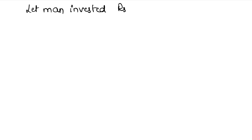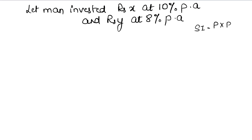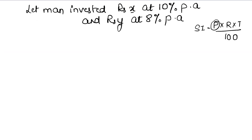Let men invested rupees x at 10% per annum and rupees y at 8% per annum. The simple interest formula is: Principal × R × T upon 100. Here principal is x and y respectively, R is 10% and 8%, and T - from the question, it says annual interest, so T = 1 year.